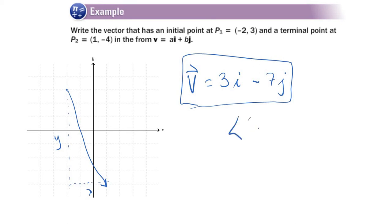Now you could also write this vector like this: <3, -7> with these kind of triangular brackets there. These mean the exact same thing.